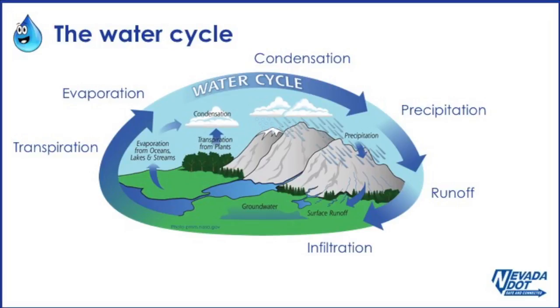Infiltration, when rain and snowmelt soaks into the ground. Transpiration, when water moves through plants and evaporates back into the atmosphere.